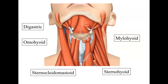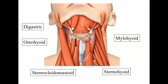Our next muscle is called the omohyoid. Omo means relation to the shoulder, hyoid means the hyoid bone. It's a distinctive muscle in that it goes all the way over and attaches to the scapula, while also attaching to the hyoid bone. Its job is to depress the hyoid bone, pulling it downward. That's the omohyoid.